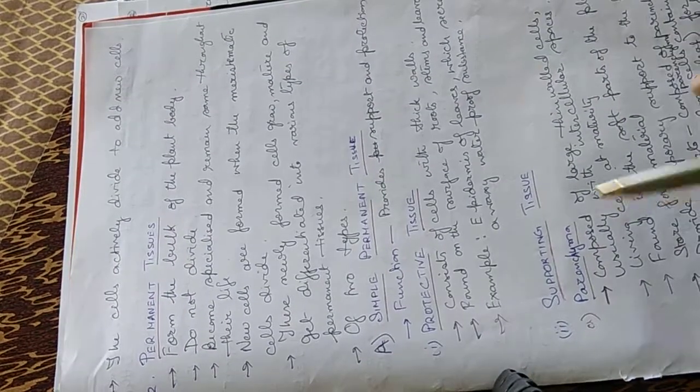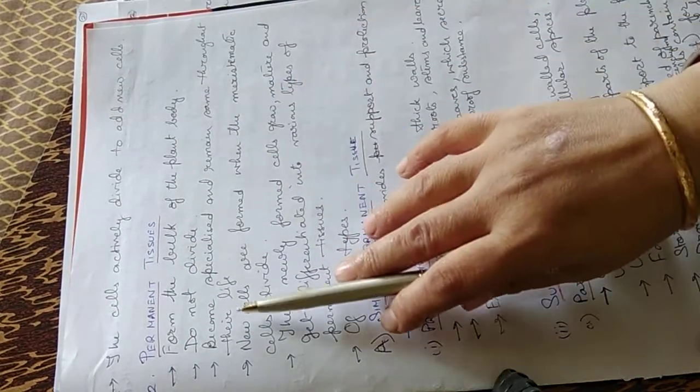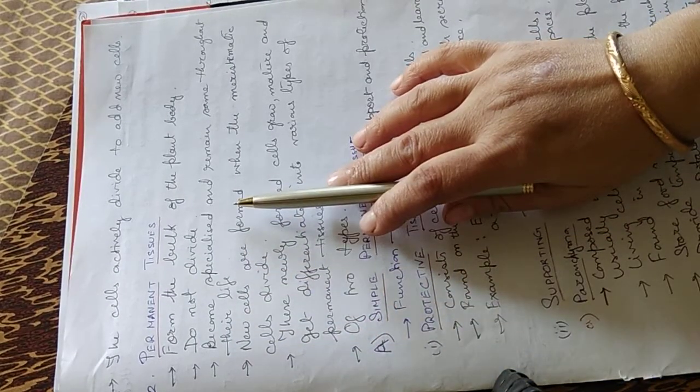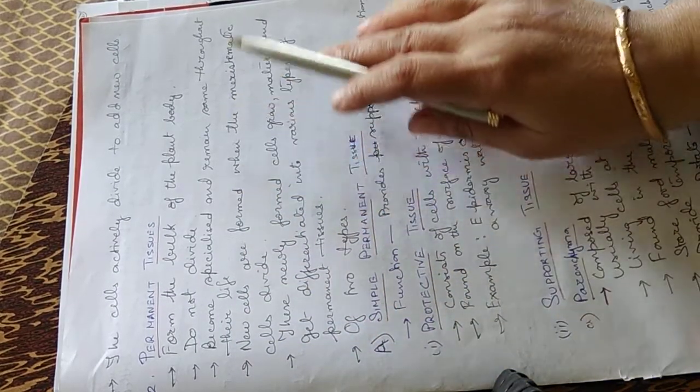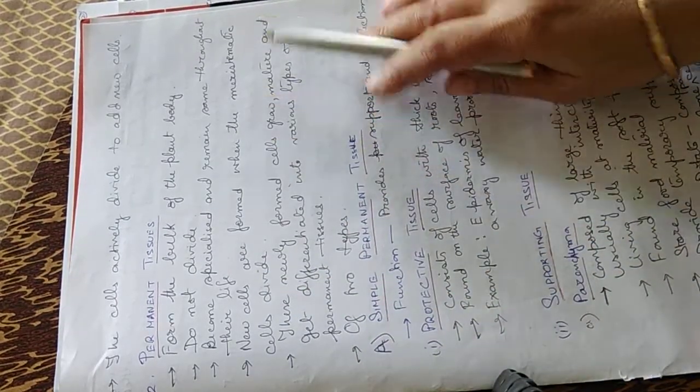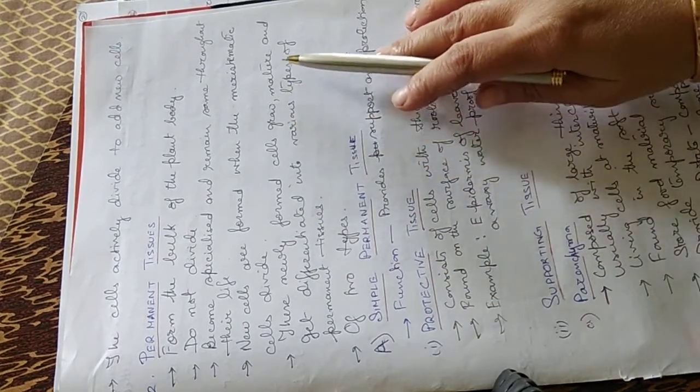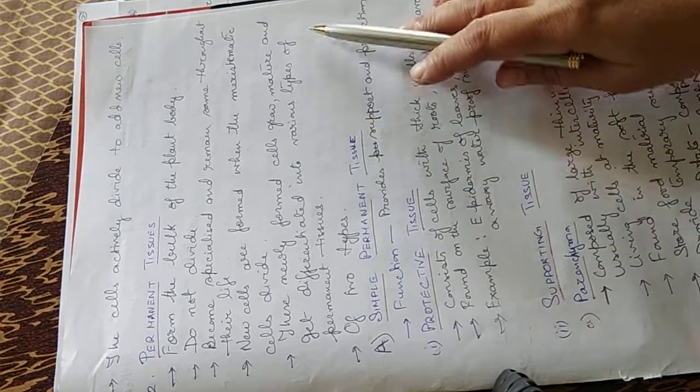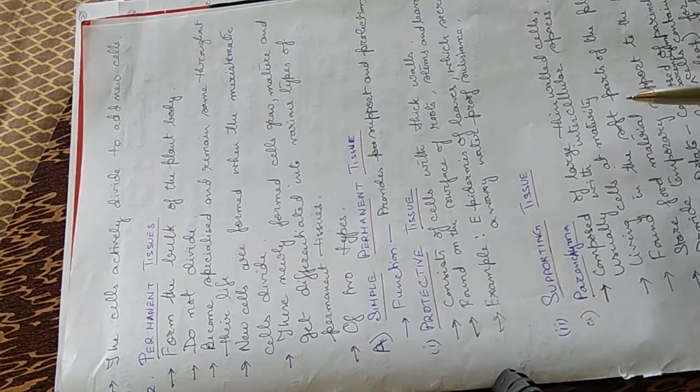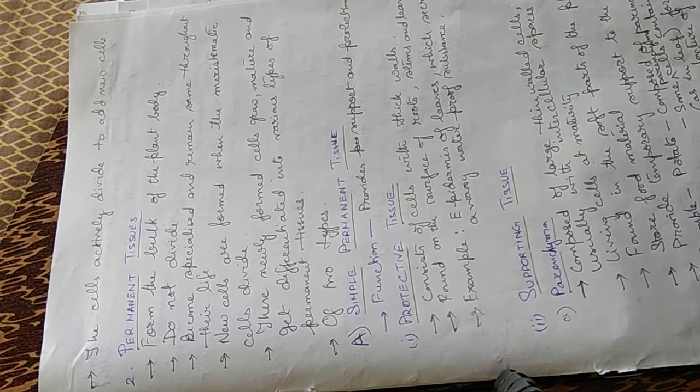Now the permanent tissues. Permanent tissues form the bulk of the plant body. They do not divide, as I told you earlier. They become specialized and remain same throughout their life. New cells are formed when the meristematic cells divide. These newly formed cells grow, mature, and get differentiated into various types of permanent tissues. These permanent tissues are of two types: simple permanent and complex permanent.